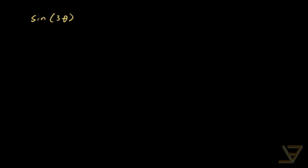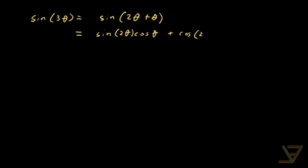Let's see where we can go with sine of 3 theta. Sine of 3 theta can be written as sine of 2 theta plus theta, and using the addition identity that equals sine of 2 theta cos theta plus cos of 2 theta sine theta.